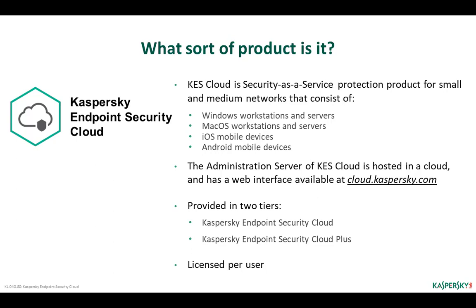Starting from version 8.0, Kaspersky Endpoint Security Cloud has two editions: Kaspersky Endpoint Security Cloud and Kaspersky Endpoint Security Cloud Plus. KESS Cloud uses a new licensing model — the product changed from per-device licensing to per-user licensing. For each user, Kaspersky Endpoint Security Cloud can now protect one desktop, laptop, or file server, and two Android or iOS mobile devices.